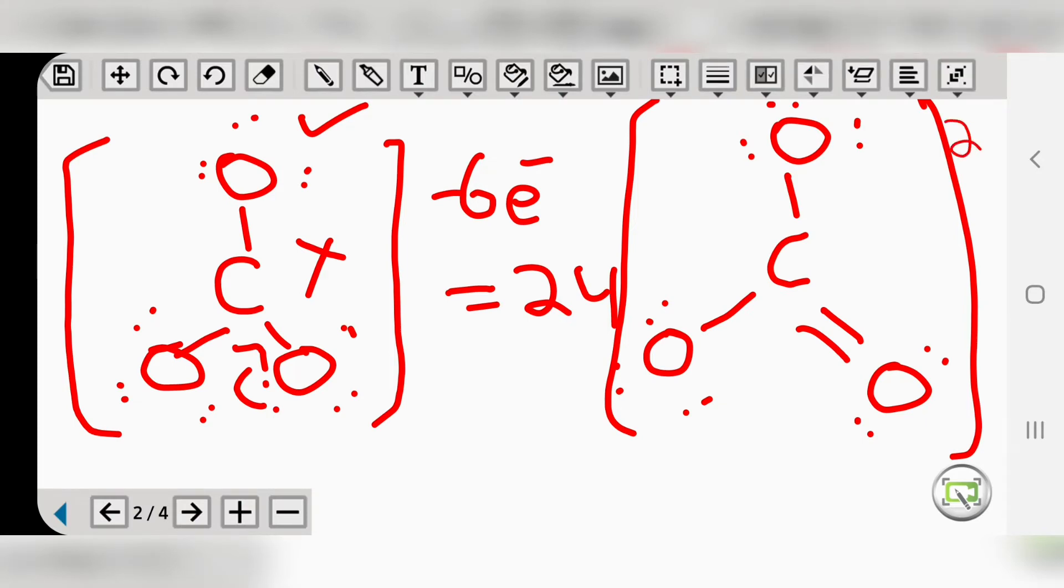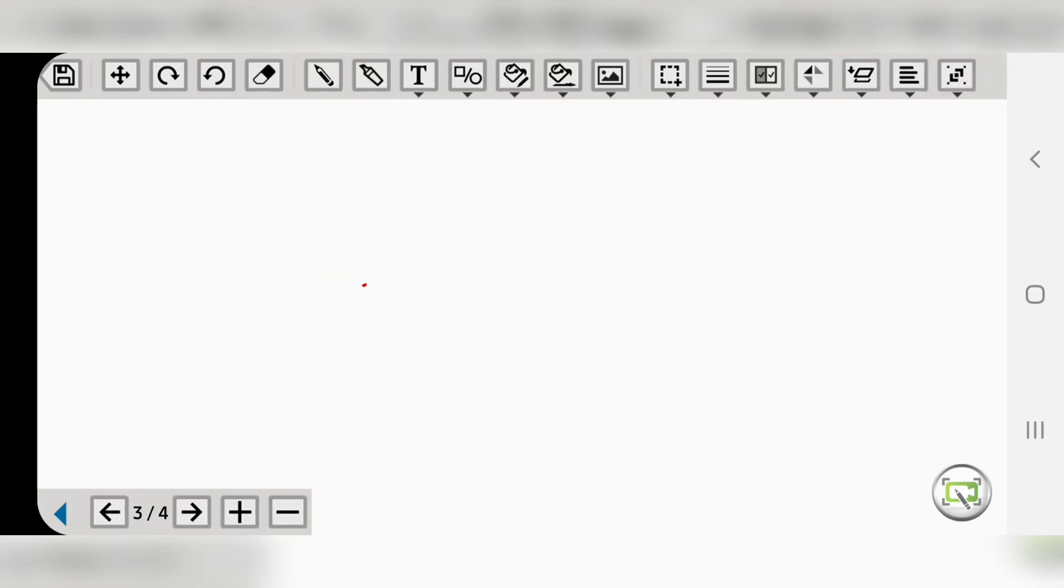Finally, we will draw this structure again for your convenience. This will be our final structure in which each oxygen has three lone pairs, except the one with the double bond that has two non-bonding pairs. Calcium will stay like this.